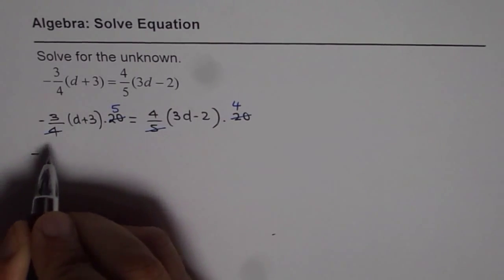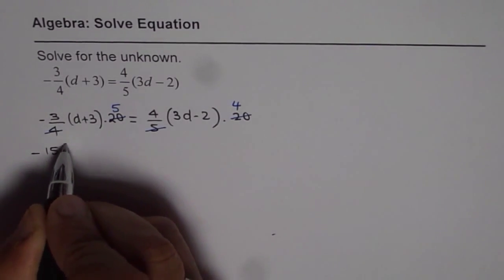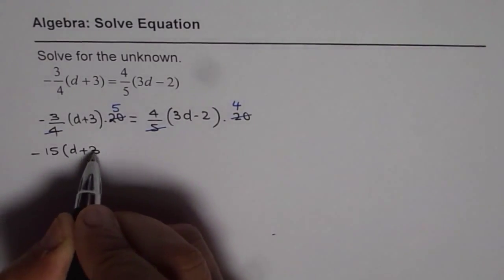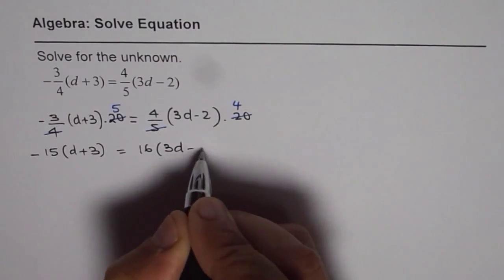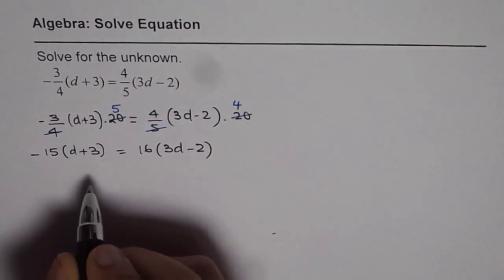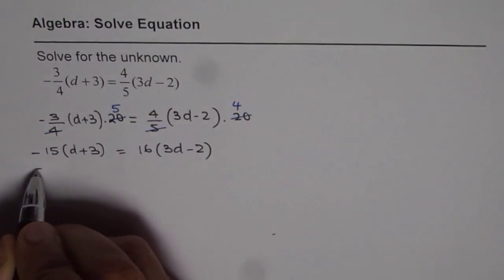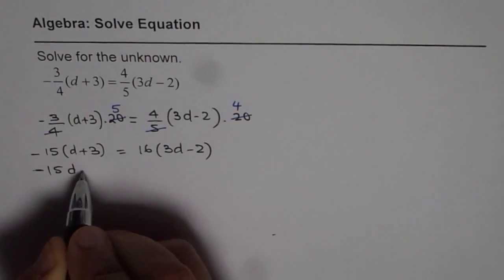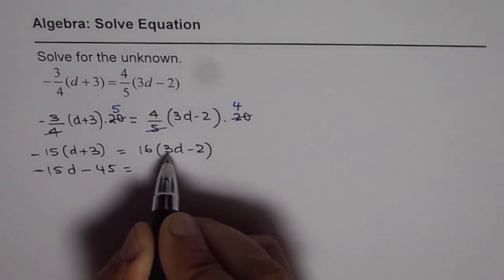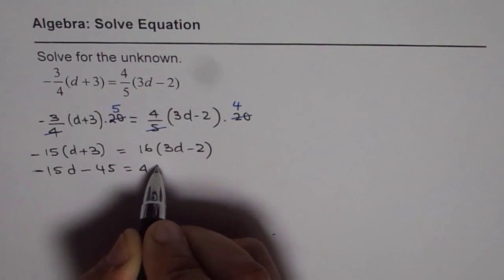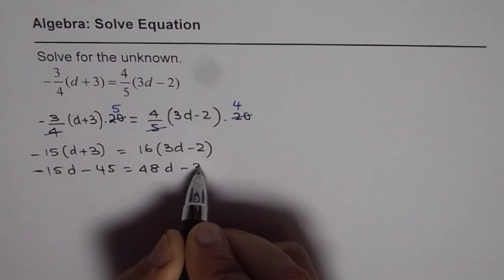Now we have minus 3 times 5 is 15, times (d plus 3) on the left side, and 4 times 4 is 16, times (3d minus 2) on the right side. Let us expand: minus 15d minus 45 equals 48d minus 32.